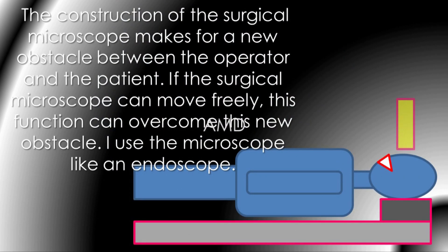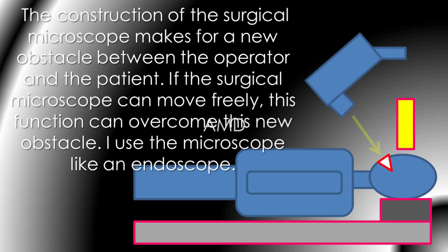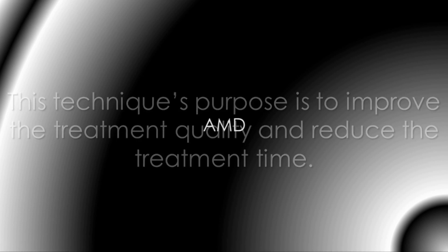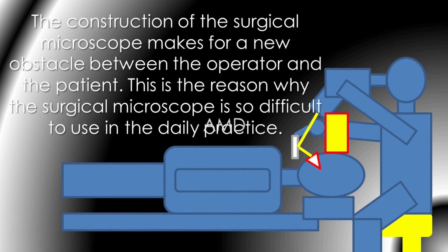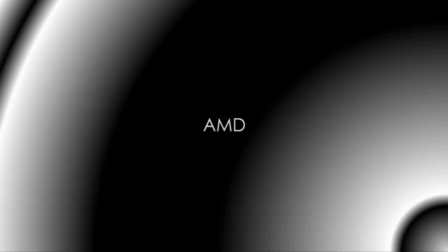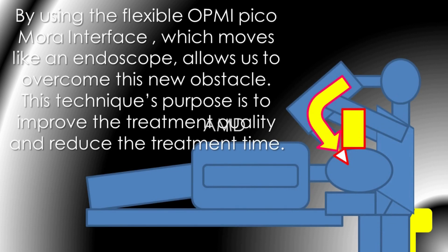The construction of the surgical microscope makes for a new obstacle between the operator and the patient. If the surgical microscope can move freely, this function can overcome that new obstacle. I use the microscope like an endoscope. This technique's purpose is to improve treatment quality and reduce treatment time. By using the flexible interface which moves like an endoscope, we can overcome this new obstacle.